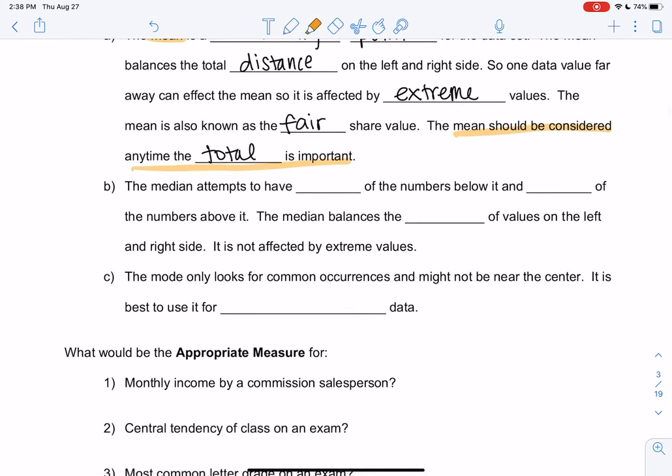The median attempts to have half the numbers below and half above. The median balances the number of values. So if one is far away and the rest are all over here, it doesn't really matter. It's going to have five numbers on the left side, five numbers on the right side. It's not going to get dragged like the mean got dragged. It is not affected by extreme values.